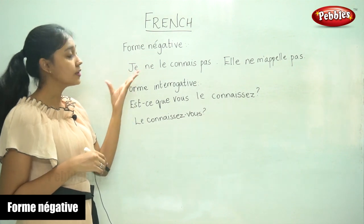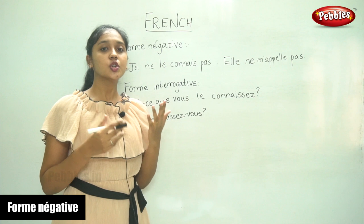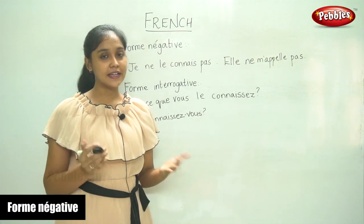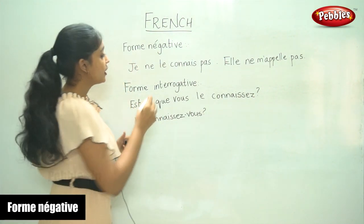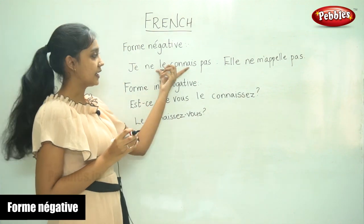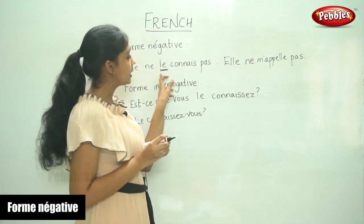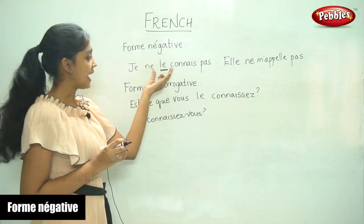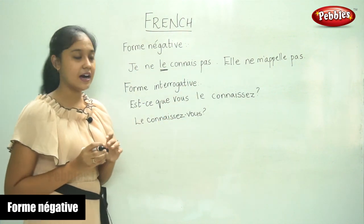We are going to see how to write this in the negative form. In other cases, we would just write 'ne' before the verb and 'pas' after the verb. In this case, we have to write 'ne' before the complement direct. The complement direct will come along with the verb, and we have to add 'ne' before and 'pas' after that.